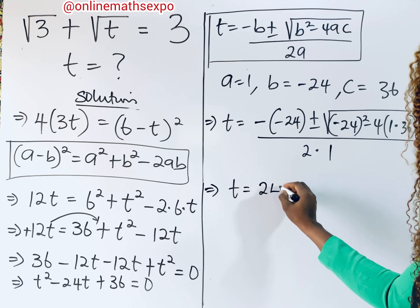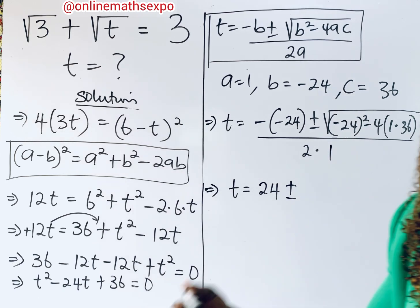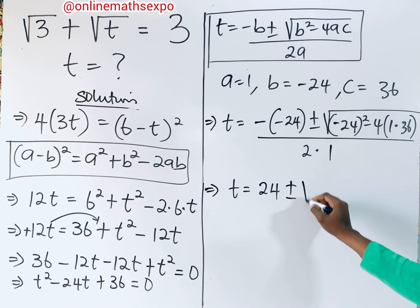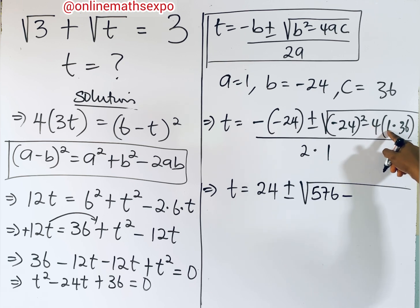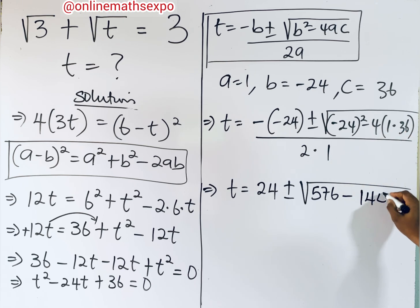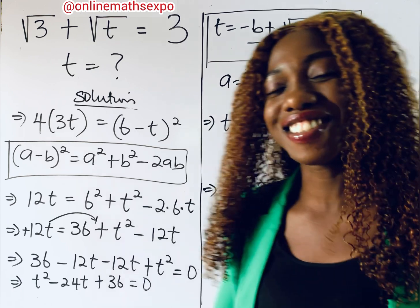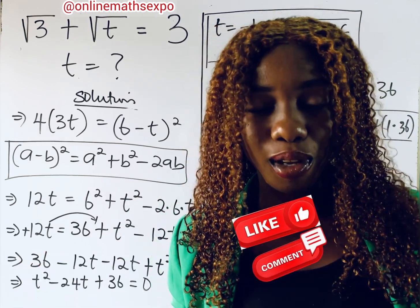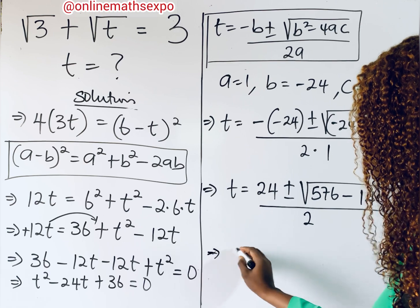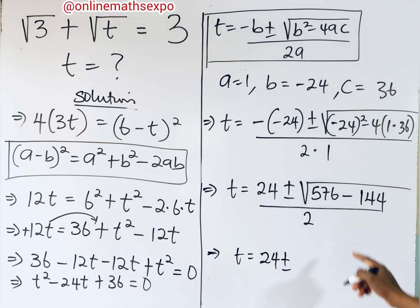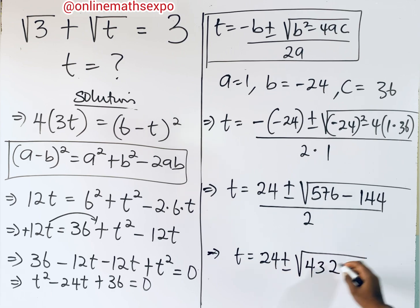This gives us t = 24 ± √(576 − 144) / 2, which simplifies to t = 24 ± √432 / 2.